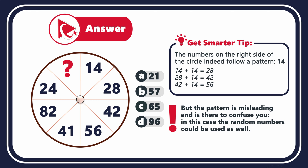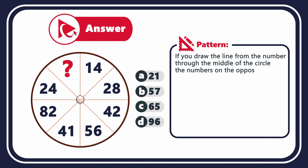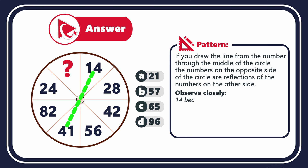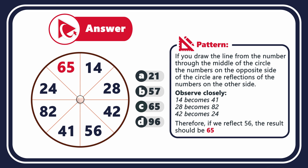So what is the right solution? Take a look at the circle in the middle. If you draw a line from the number through the middle of the circle, the numbers on the opposite side are reflections of the numbers on the other side. For example, 14 becomes 41, 28 becomes 82, 42 becomes 24, and 56 then becomes 65. So the correct answer here is choice C, 65.